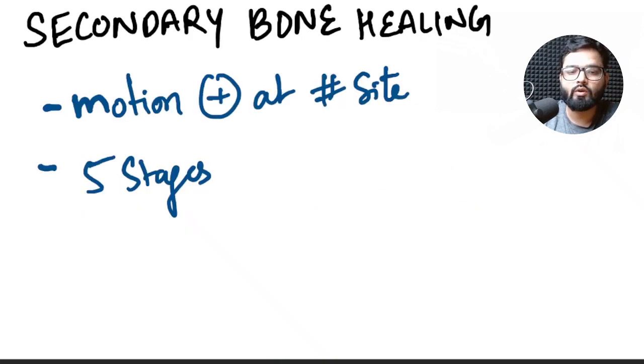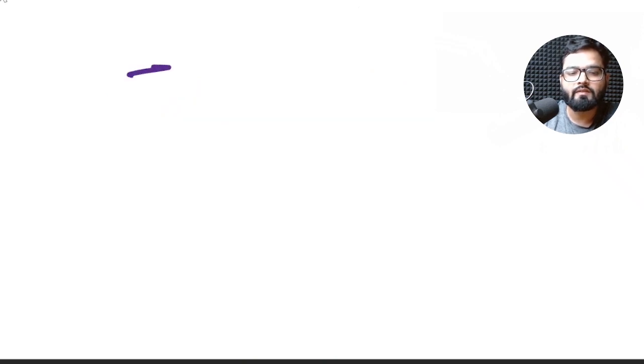Now we will discuss the secondary bone healing in detail. It only occurs when there is some micromotion present at the fracture site and the secondary bone healing occurs through five stages. So what are all the five stages? The five stages are first hematoma formation.